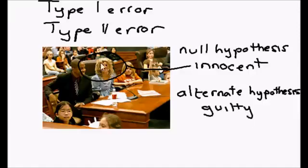So Goldilocks is innocent but if you reject the null hypothesis and accept the alternate hypothesis, if you make that kind of error, this is a type 1 error. If you incorrectly reject the null.